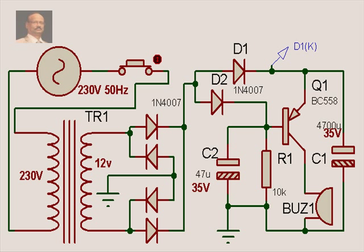Hello, mains fail alarm system. We have a step down transformer, a bridge rectifier, a switching transistor, a buzzer, and a capacitor. When the mains is available, the step down voltage reaches here and charges this capacitor.